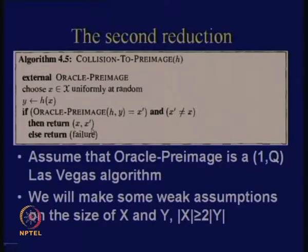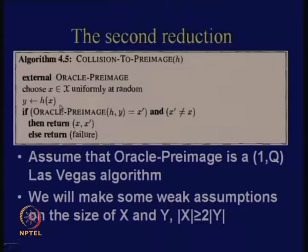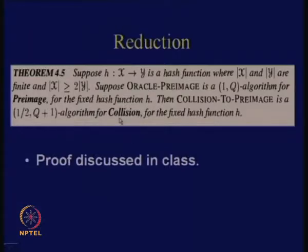Now the question is: if the oracle preimage is a (1, q) Las Vegas algorithm, that means the probability of giving you the preimage solution is 1 and there are q queries required — then what is the corresponding epsilon value and number of queries required for this collision to preimage oracle? The number of queries is q plus 1. About the probability, we make an assumption that the cardinality of X is more than twice the cardinality of Y. Then we can show that the probability is at least 1/2, with q+1 queries.